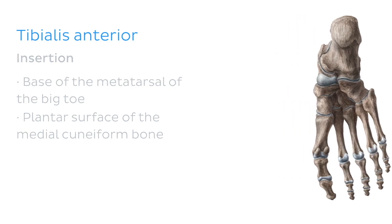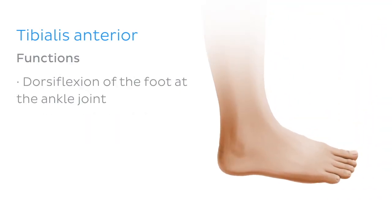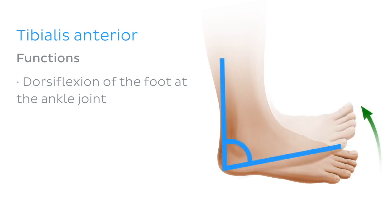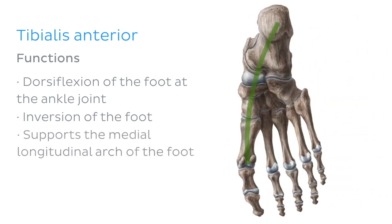So what does the tibialis anterior do? When this muscle contracts, it causes dorsiflexion of the foot at the ankle joint, which decreases the angle between the dorsum of the foot and the leg. This muscle is also responsible for inversion of the foot, which involves tilting the sole of the foot towards the midline of the body. The tibialis anterior also supports the medial longitudinal arch of the foot.